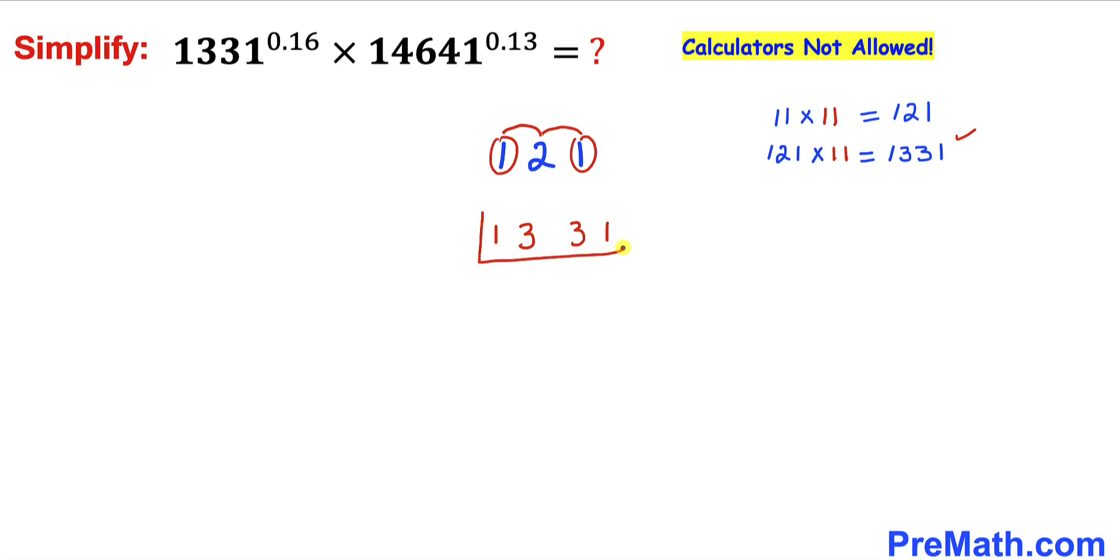So therefore we got 1331, and moreover 1331 times 11 is going to give us 14641. And now let me show you how we got this number. Let's focus on 1331 over here and let's look at these two end numbers. I'm going to write down 1 and 1 over here.